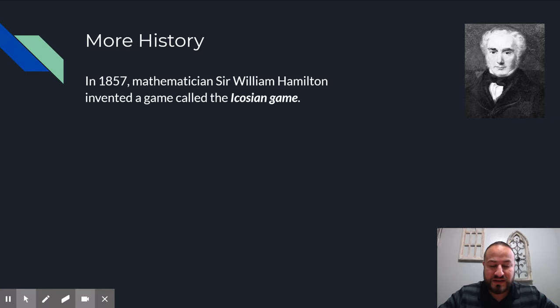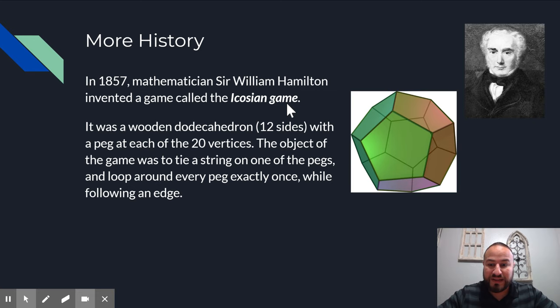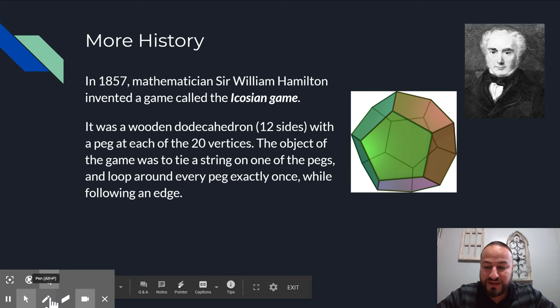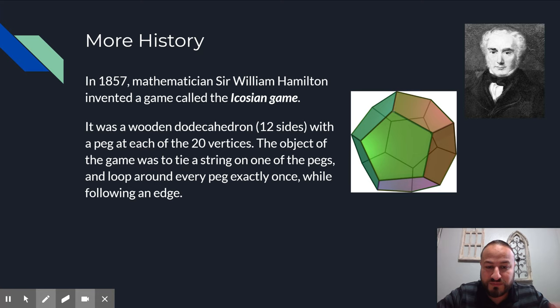Soon, if we were in class, we would actually start out the lesson by playing this game. The original game looks something like this. It was a wooden dodecahedron with a peg. There's 20 vertices on this side. Dodecahedron has 12 sides and there's 20 vertices on this three-dimensional shape.